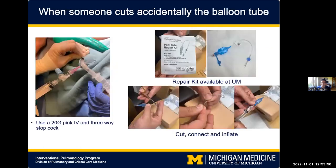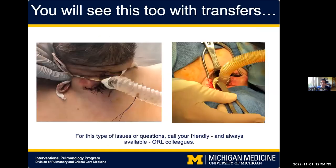One day I was called from the AD because someone cutting ties accidentally also cut the pilot cuff line of the tracheostomy. In those emergency cases, you can use a 20-gauge pink IV needle to re-inflate the cuff. A pilot tube repair kit is available in all ADs and ICUs. The technique is: cut, connect, inflate — then ventilate the patient. This is just a bridge; you will still need to replace the tracheostomy entirely.